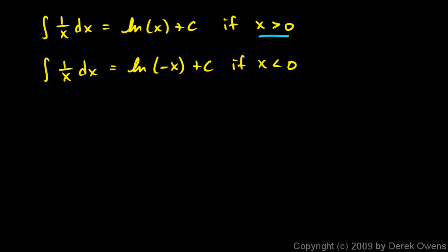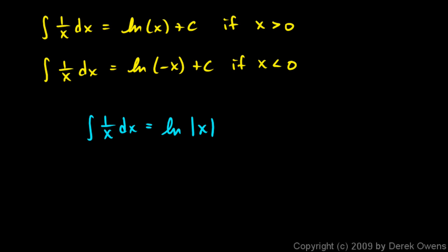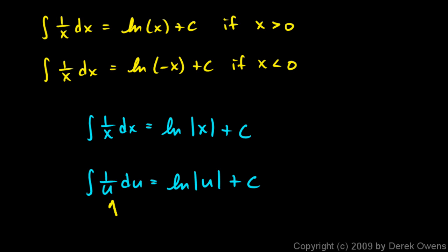Look what we have here: if x is greater than 0 we just use x; if x is less than 0 we just use negative x. That means we're simply using the absolute value of x both times. So both of these ideas can be summed up with this statement: the integral of 1 over x dx is equal to the natural log of the absolute value of x plus c. And it's commonly written like this: the integral of 1 over u du equals the natural log of the absolute value of u plus c. Writing it like this makes it clear that u can be a function, not just a variable, and using u helps point that out.